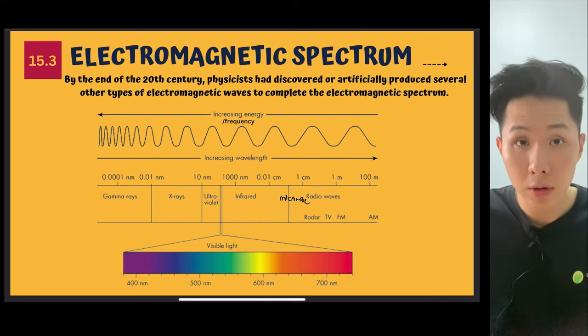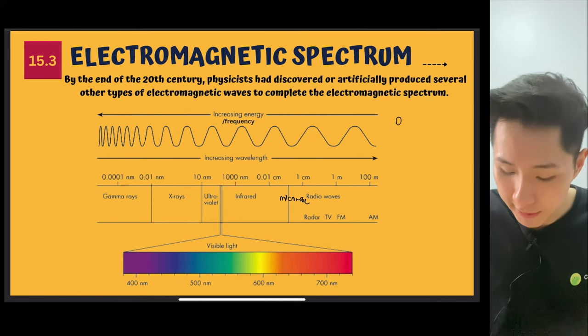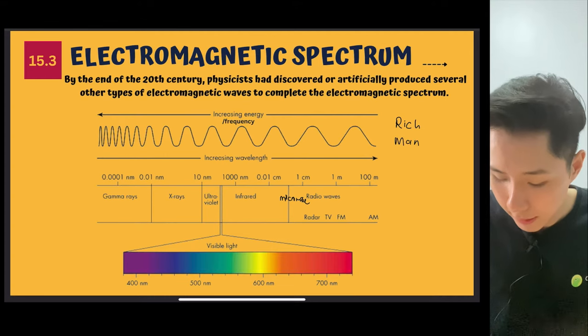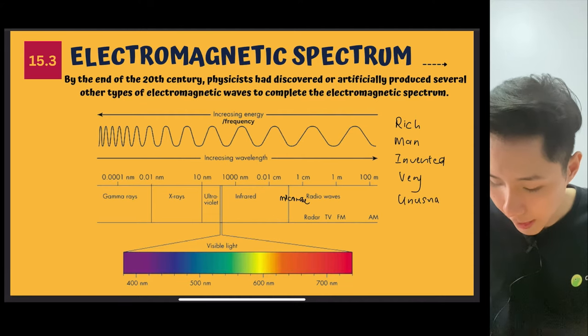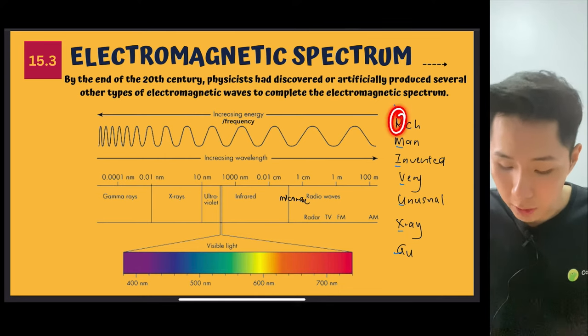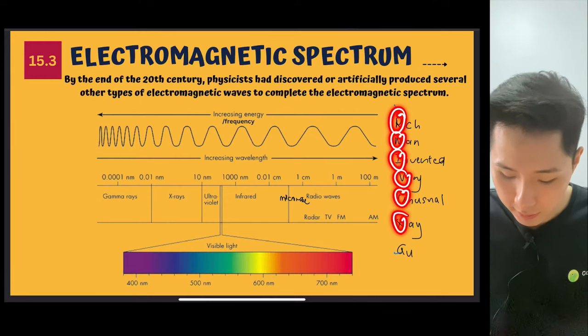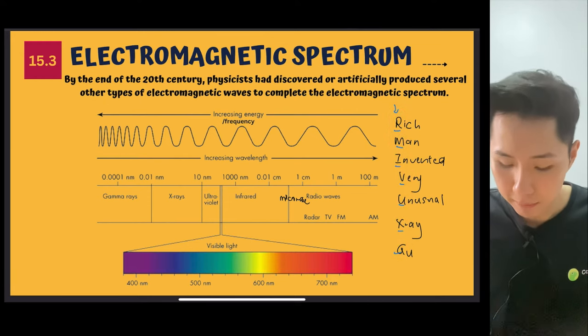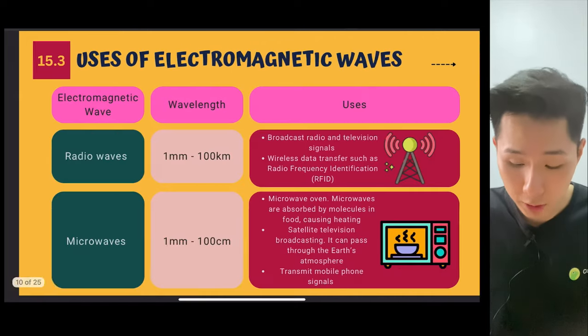So one way I would remember this is this mnemonic, which is rich man invented very unusual X-ray gun. So the first character of each word gives you the order. R stands for radio wave, microwave, infrared, visible light, ultraviolet, X-ray, gamma ray. So that's how I remember the order in which they appear.